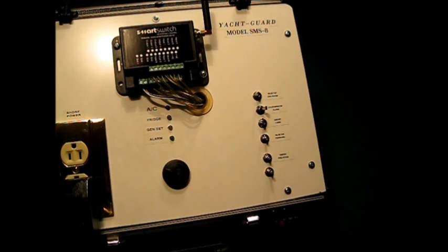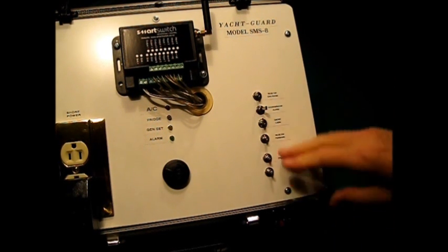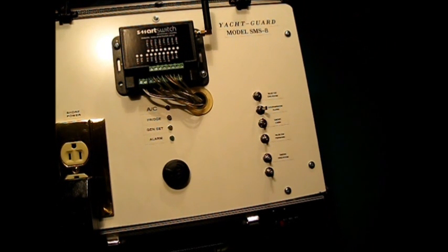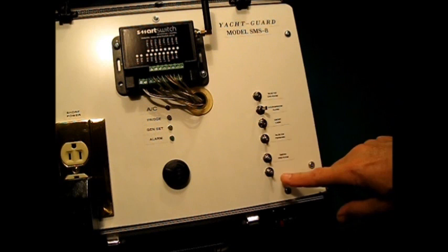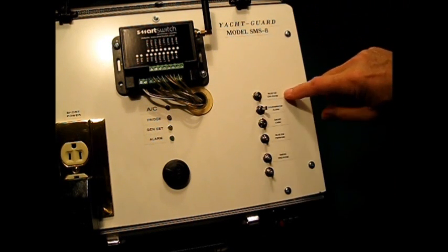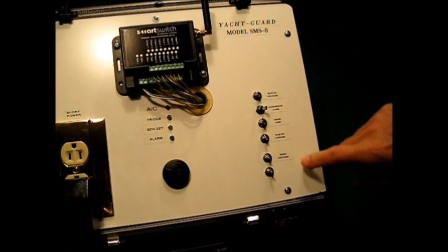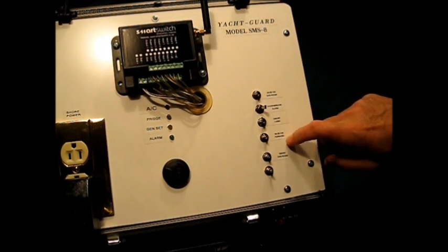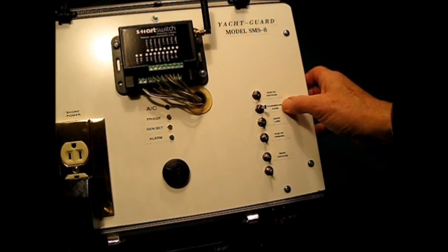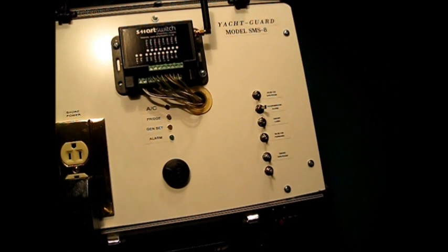Now let's take a quick look at how this system works. These switches, as I indicated before, are wired back to the inputs on the SMS-8. Each one of these is designated some part of the vessel: this is the bilge switch for the engine room, the bilge switch forward, smoke in the cabin, smoke in the engine room, and this is the door window alarm switch.